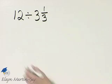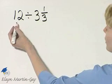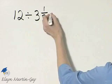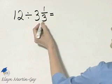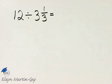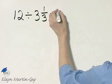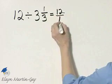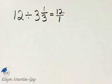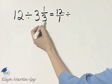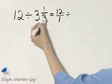Let's divide these two numbers. I have the whole number 12 divided by the mixed number 3 and a third. So remember how we divide? Since this is a mixed number, I'm going to take a step and write it as an equivalent improper fraction. I can write 12 as 12 over 1, and then divide it by — remember how we write this as an improper fraction?